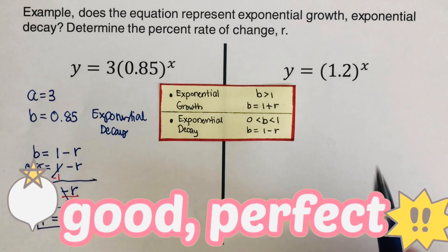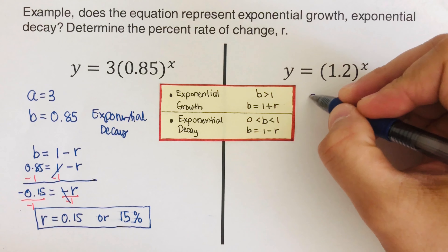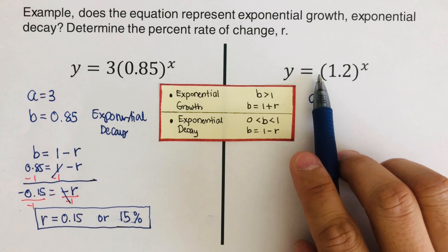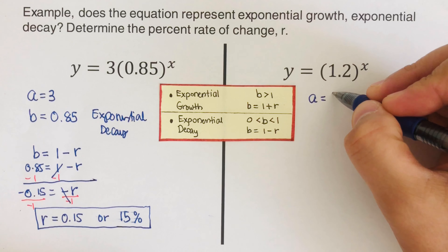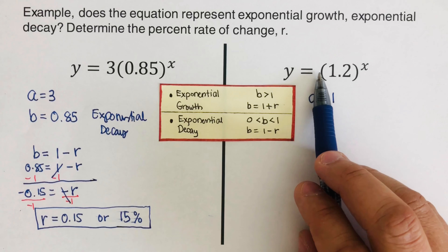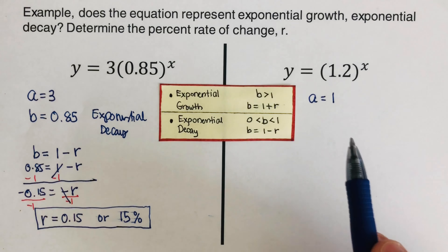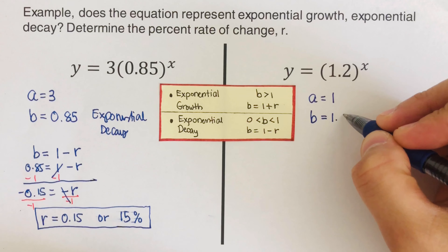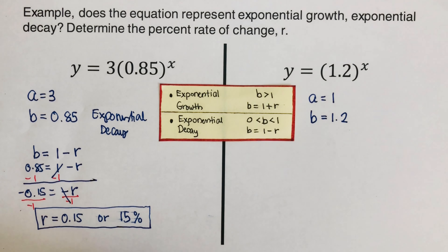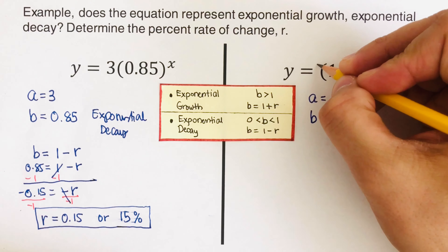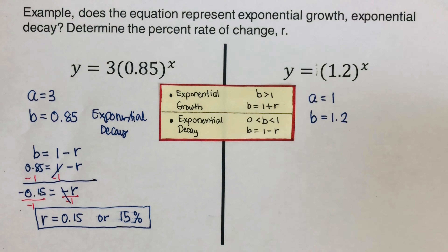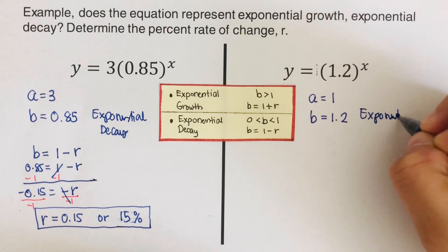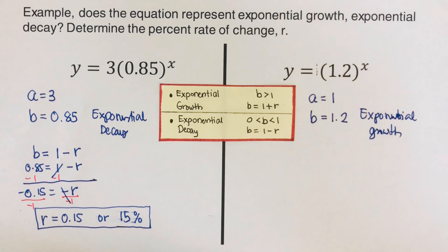Moving on to the next problem: some might think there's no 'a' value, so a = 0, but remember there is an invisible coefficient of 1 in front of the parentheses. If a were 0, everything would be 0. So a = 1. Our b here is 1.2. Since 1.2 is greater than 1, this is an example of exponential growth.